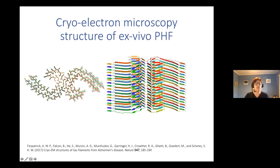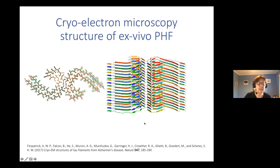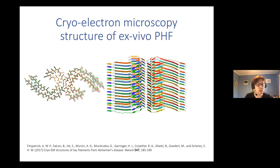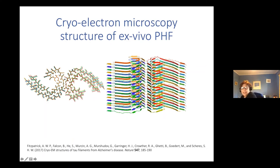As you will be familiar, a cryoelectron microscopy structure was solved in the last few years of the paired helical filaments from patients when the PHFs were extracted from tissue. I'm showing an image here — you can see again that the beta strands are running perpendicular to the fibre axis, and if we look to the left-hand side, you can see the conformation of the structure down the fibre axis.